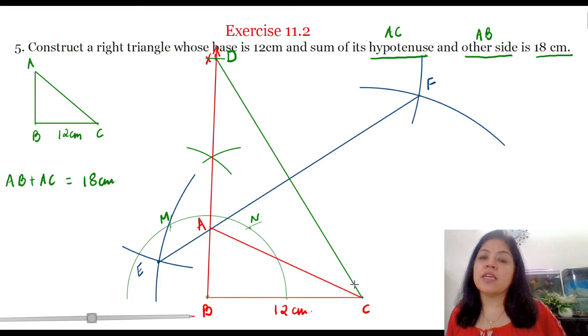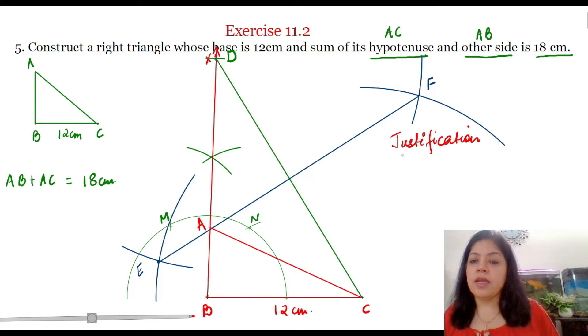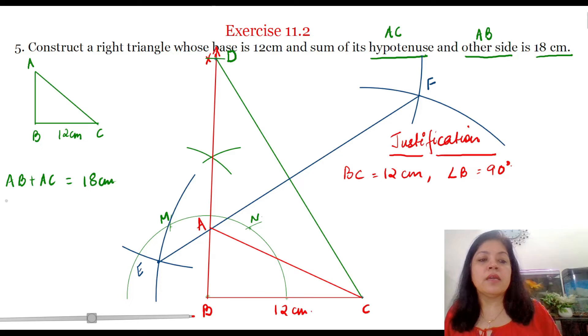So now let us do the justification and see how this triangle ABC is the required triangle. Now in this triangle ABC, base BC is equal to 12 cm and angle B is equal to 90 degrees.